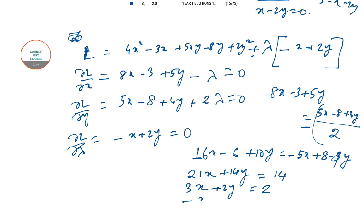If we just solve these two formations: 21x plus 14y equal to 14, or 3x plus 2y equal to 2. This one is one equation. We have another equation here: minus x plus 2y equal to 0. If we just solve it, so 4x equal to 2, x equal to half.